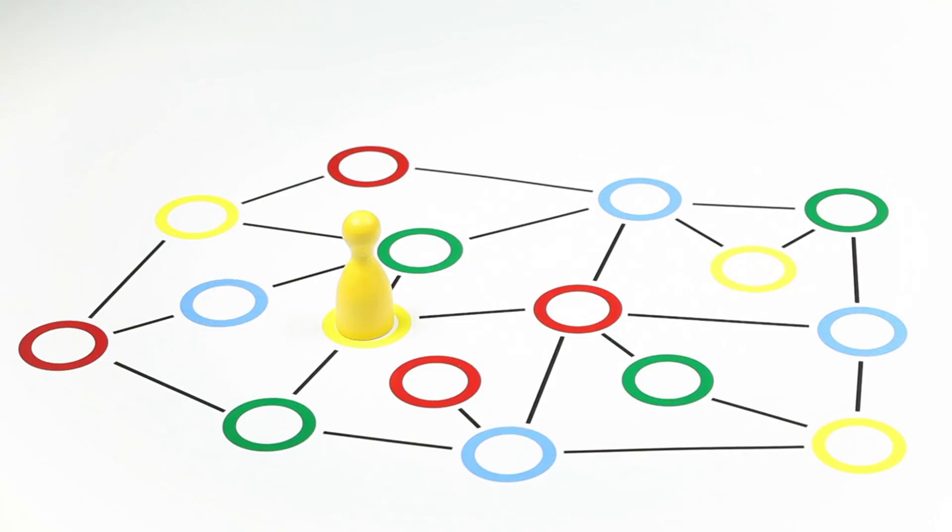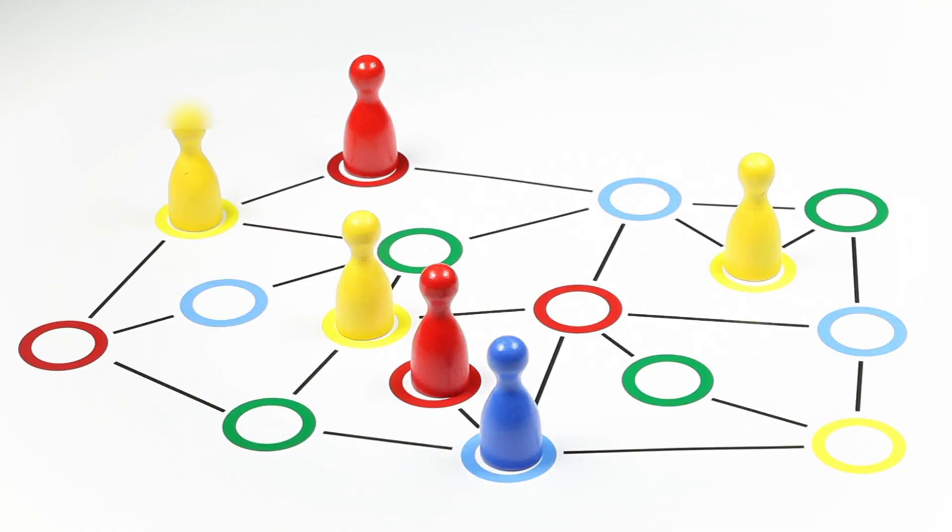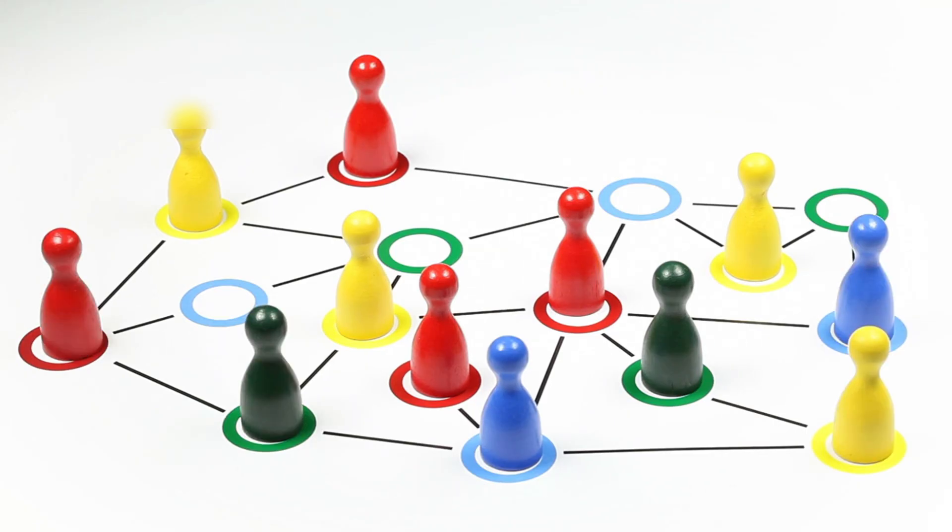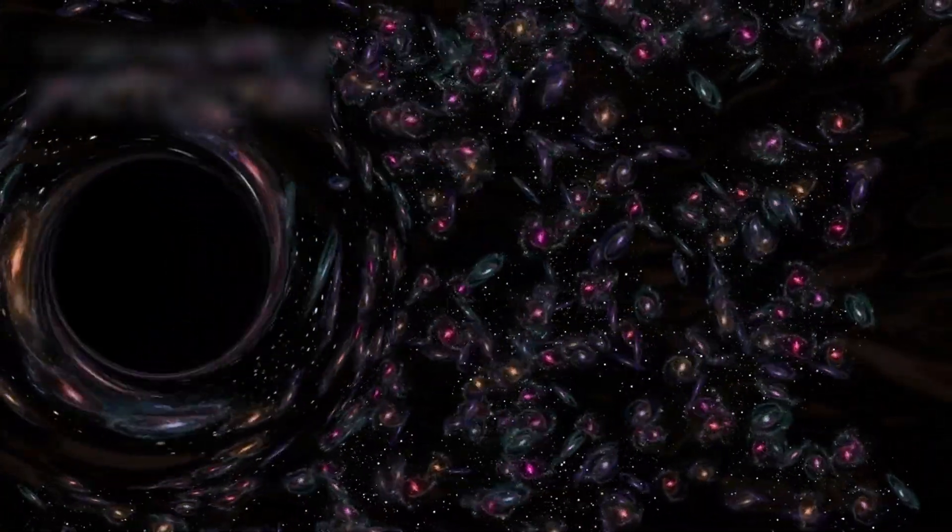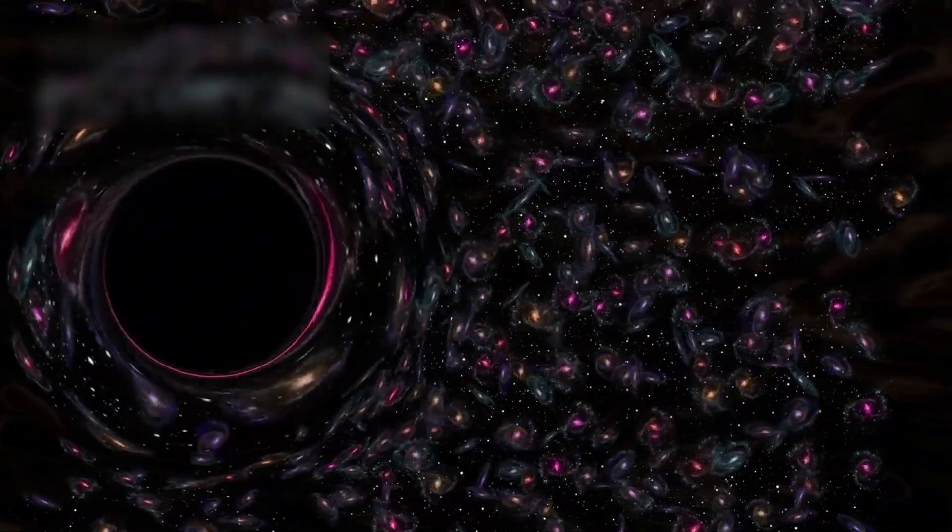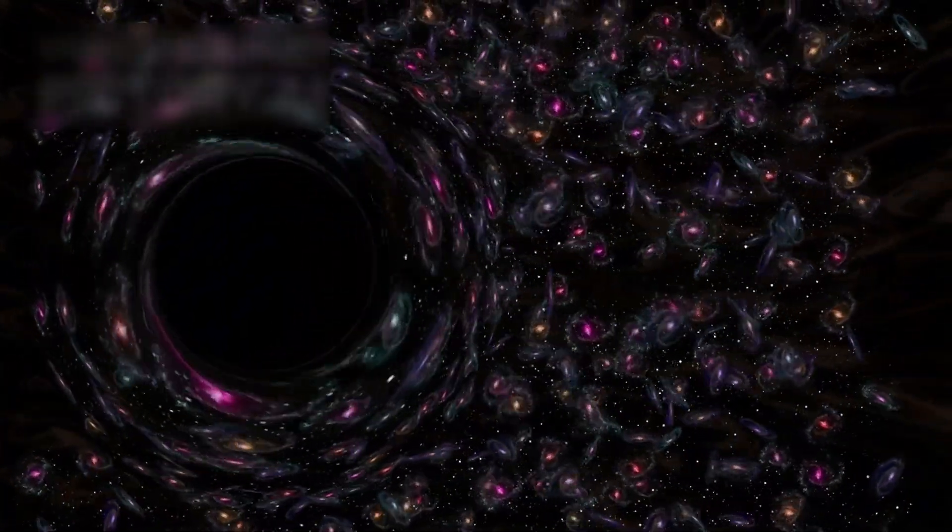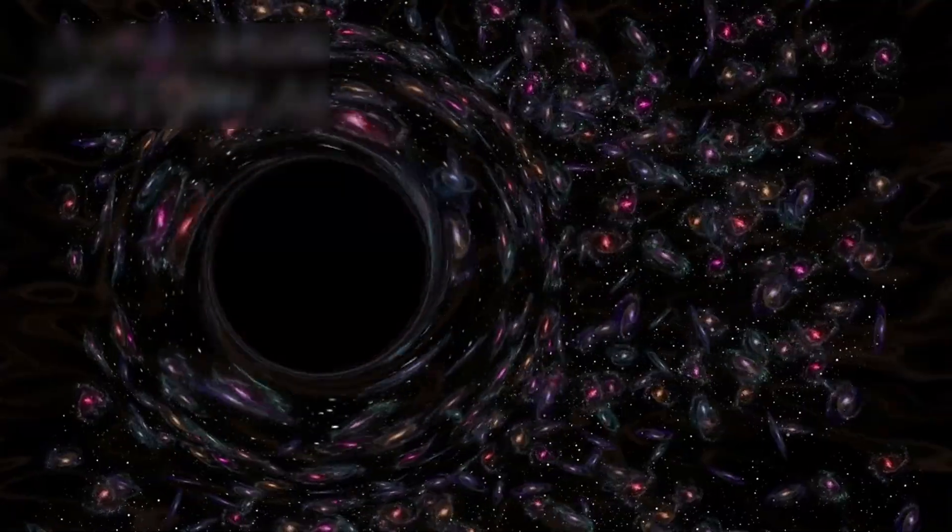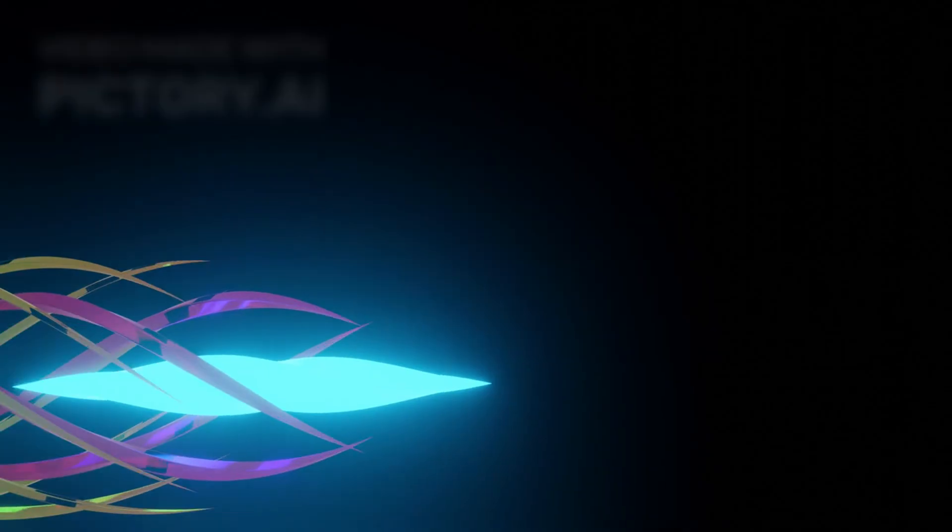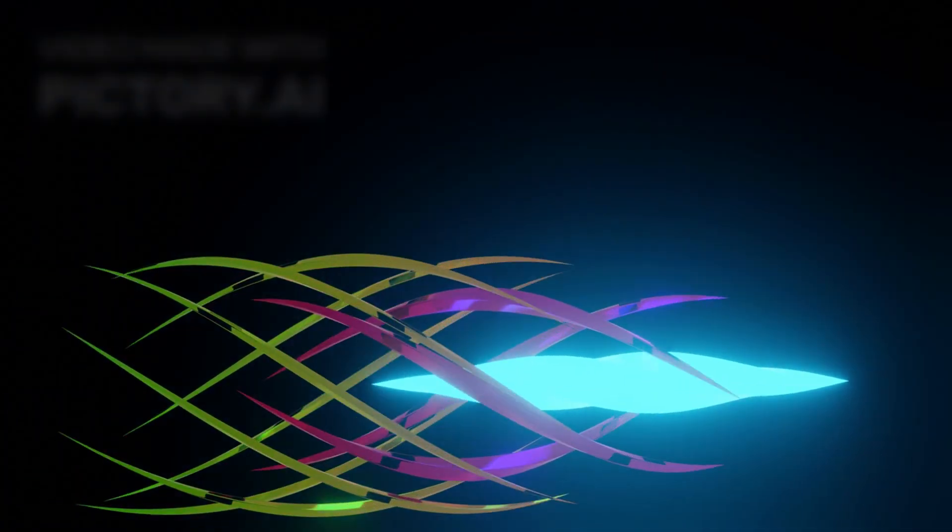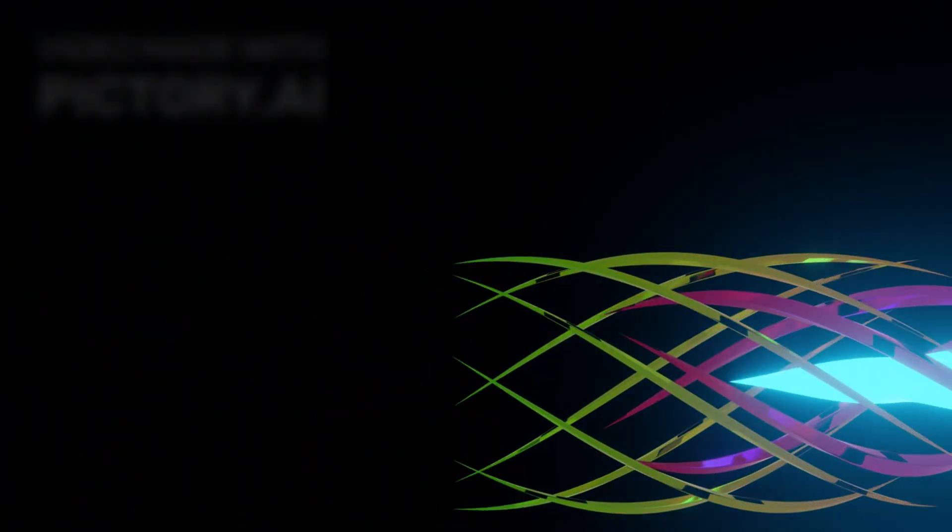The scientific community now faces a choice: cling to traditional models or confront the possibility that the early universe evolved in ways far more rapid and intricate than previously believed. If confirmed, these galaxies could indicate that star formation, galactic clustering, and the creation of cosmic structures happened at a pace that challenges long-standing assumptions. Some may even speculate that these observations hint at unknown physical processes or forces.